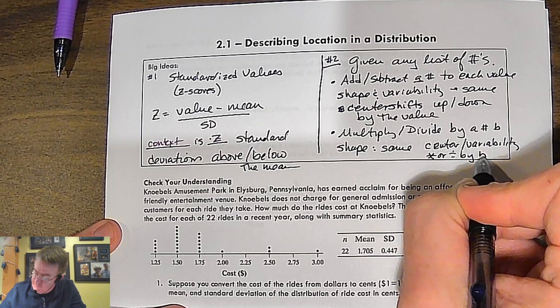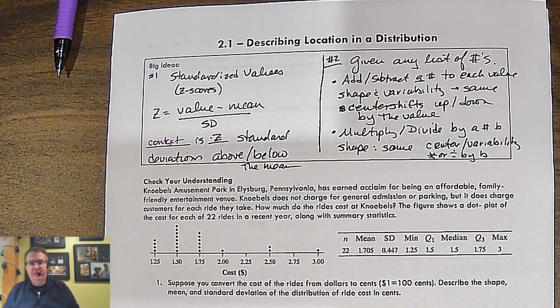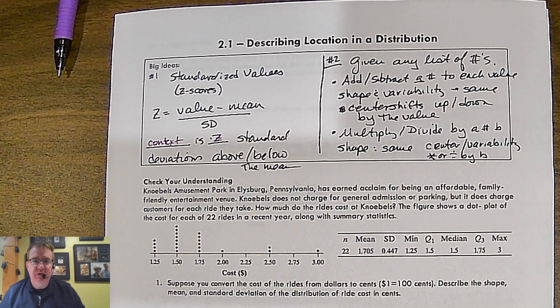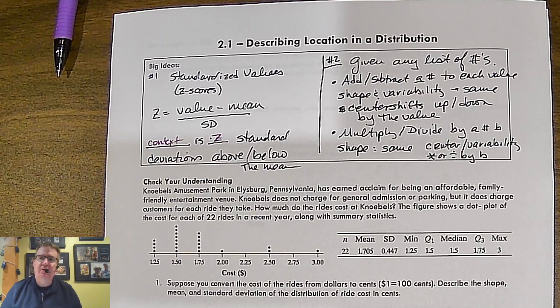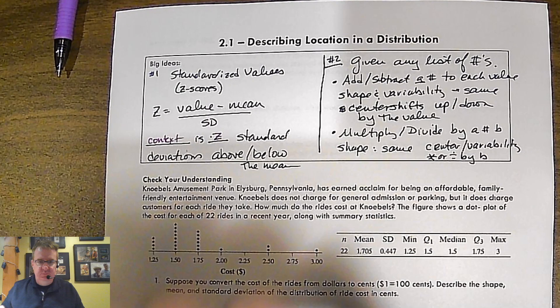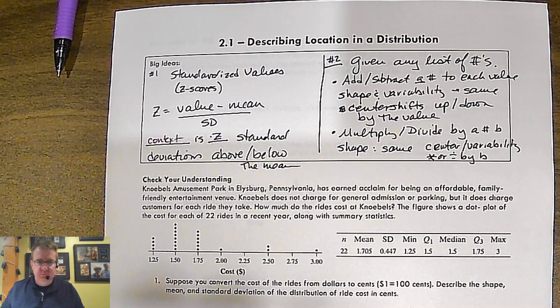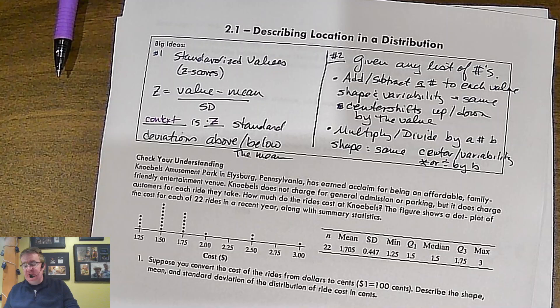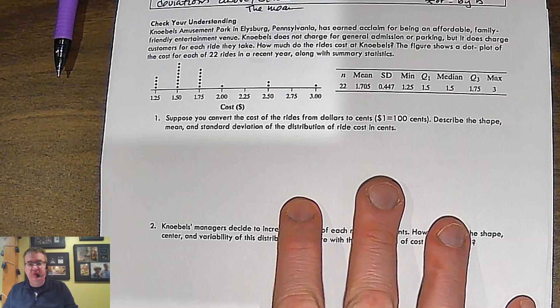These concepts here are going to be the types of things that you will see in a multiple choice test question. And they'll just say, you know, and they'll talk through it. And it'll be kind of a hypothetical thing. But you're going to have to be able to reason your way through some of this. This is why it's one of the big ideas. All right. So as usual, pause this. We're going to run through the check your understanding problem. And then we'll come back and do it together.